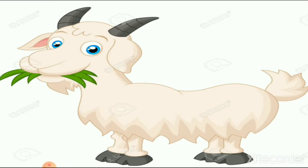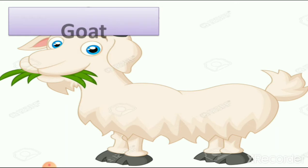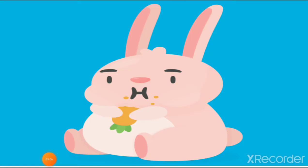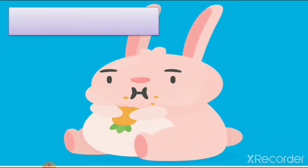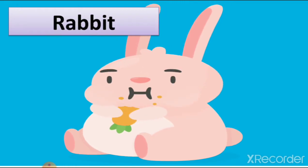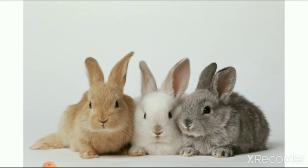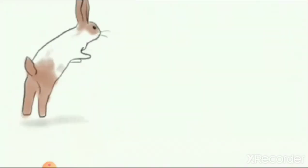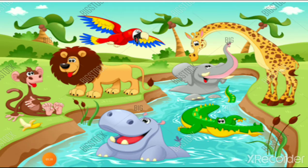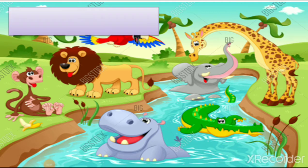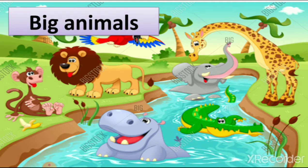We also saw the picture of goat. Then we learned about rabbit — rabbit is also a small animal, and we saw pictures of different colored rabbits.